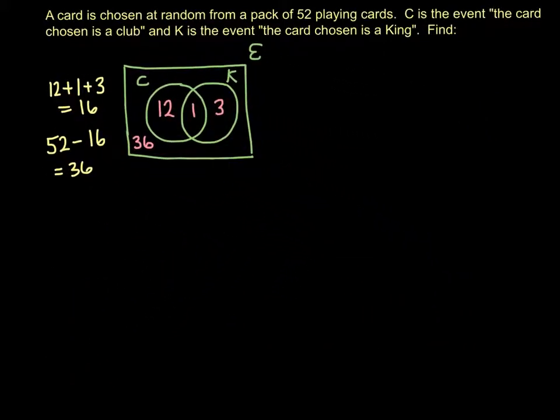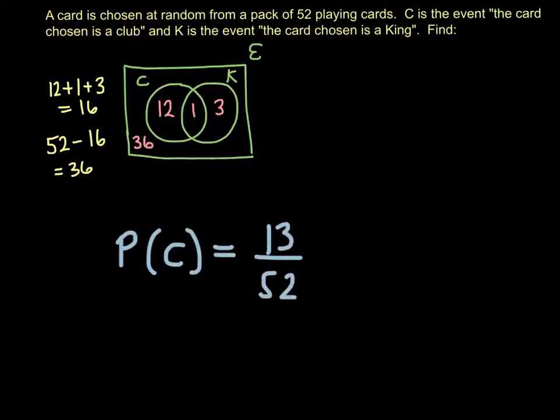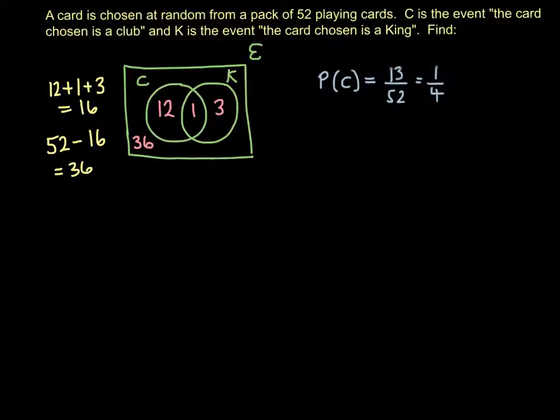So now we can use that, because we know there's 52 cards in a pack, to work out some probabilities. So the probability of the event C, that means the probability of picking a card as a club. So we've got 13 cards all together in our C circle. So that's going to be 13 over the total, 13 over 52, which is equal to a quarter. If you think there's four suits in a pack of playing cards, only one of the suits is a club. So that might have been an easier way to do it. But we want to show how we can use Venn diagrams to solve some of these problems.